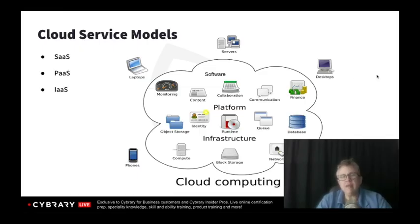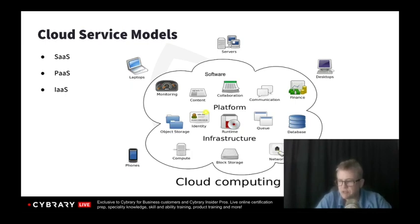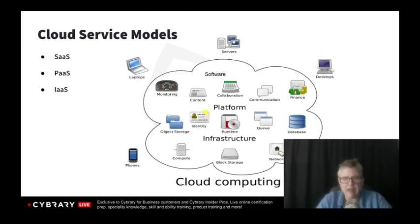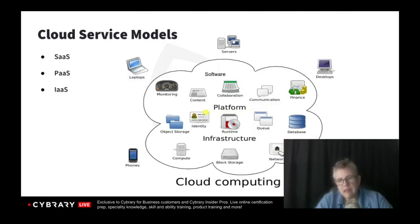Once we determine the cloud deployment model — what's going to be the best environment to store our data or host our resources — the next element we have to think about is what are we really looking for from moving to the cloud? What sort of cloud-based services are we using? We've got software as a service, platform as a service, and infrastructure as a service, and often we're utilizing more than one. This is referred to as a stack. We might have SaaS on top of PaaS on top of IaaS. You'll trade flexibility for ease of use, or control for ease of use.